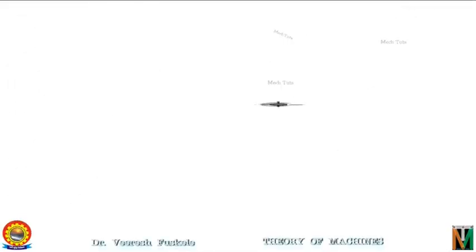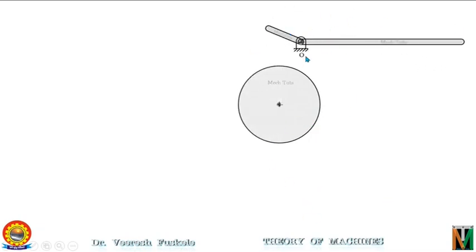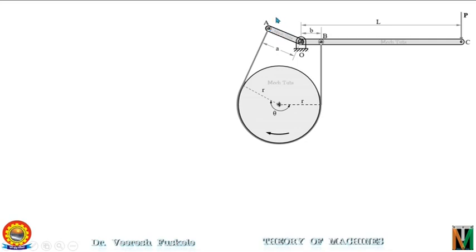Let's see the differential band brake. This is the drum and this is the lever which is hinged at point O. The fulcrum is provided somewhere along the length of the lever and not on one side of the lever. This is the band. One end of the band is connected to one point and another end is connected to another point. The radius of the drum is R and the angle of wrap is theta. The distance of end A of the band from the fulcrum is A, and the distance of end B from the fulcrum is B. The force P is applied at the end of the lever and the distance of force P from the fulcrum is L.